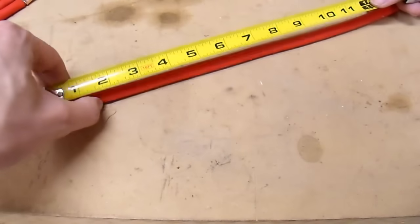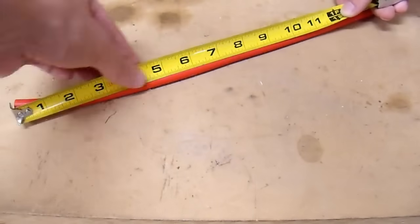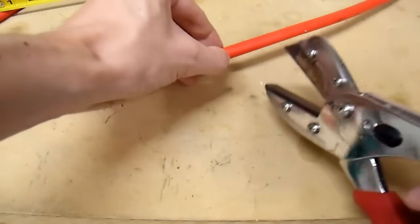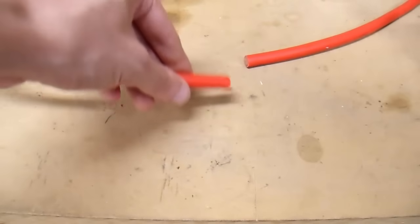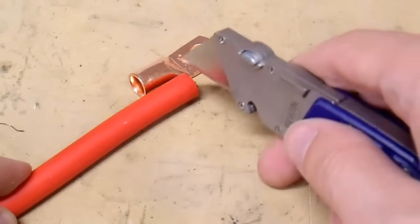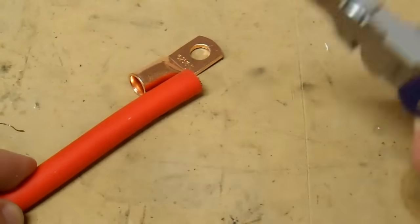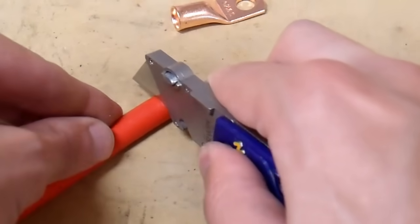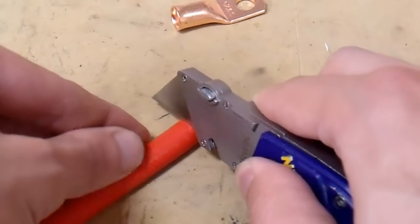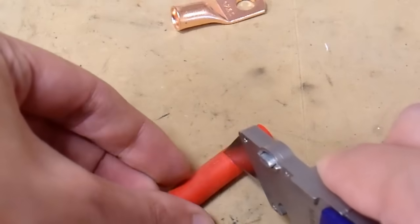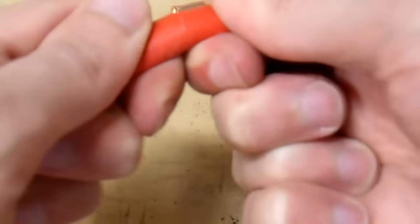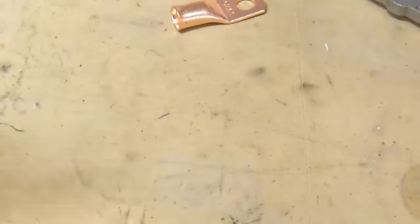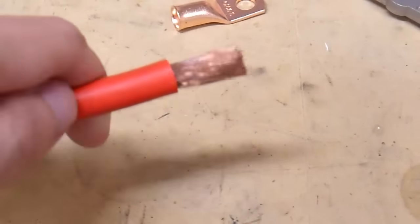First thing to do is measure your cable. I know that I need about 10 inches. Next, I need to strip the insulation off just like before with a standard utility knife. You don't need any special wire strippers. Just make sure that you don't go too deeply into the insulation, otherwise you will end up cutting off strands of wires. The insulation will just separate just like that.